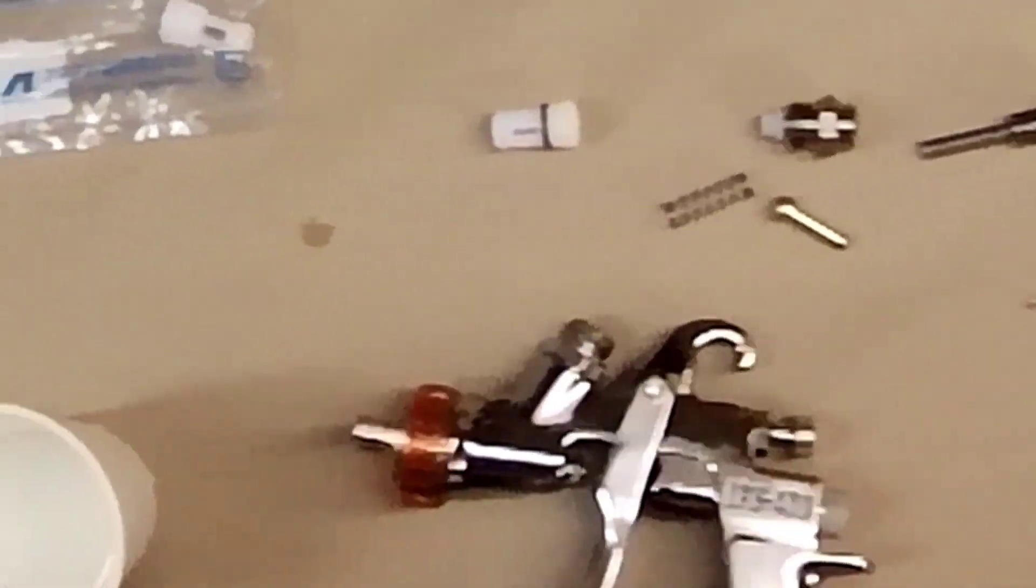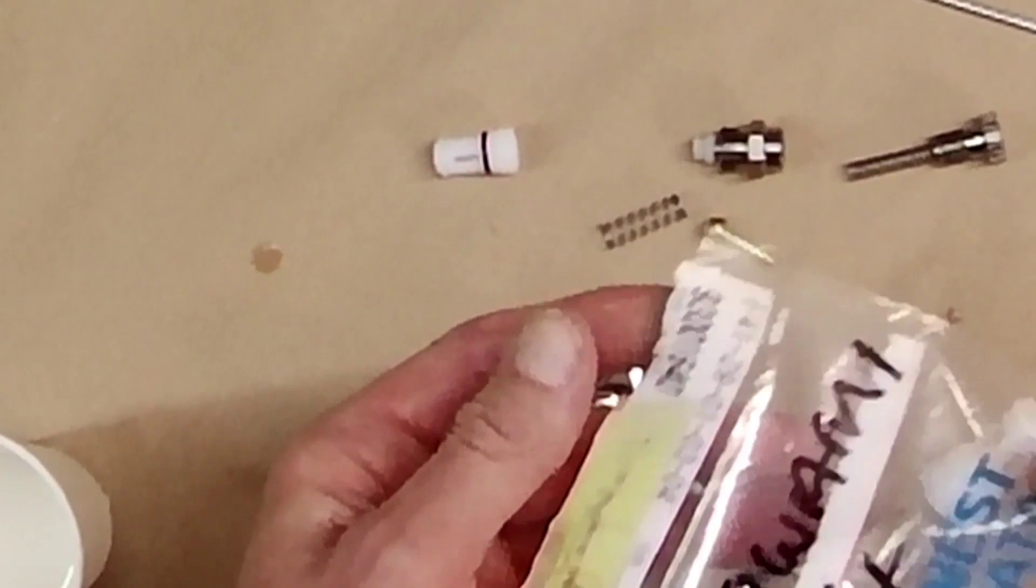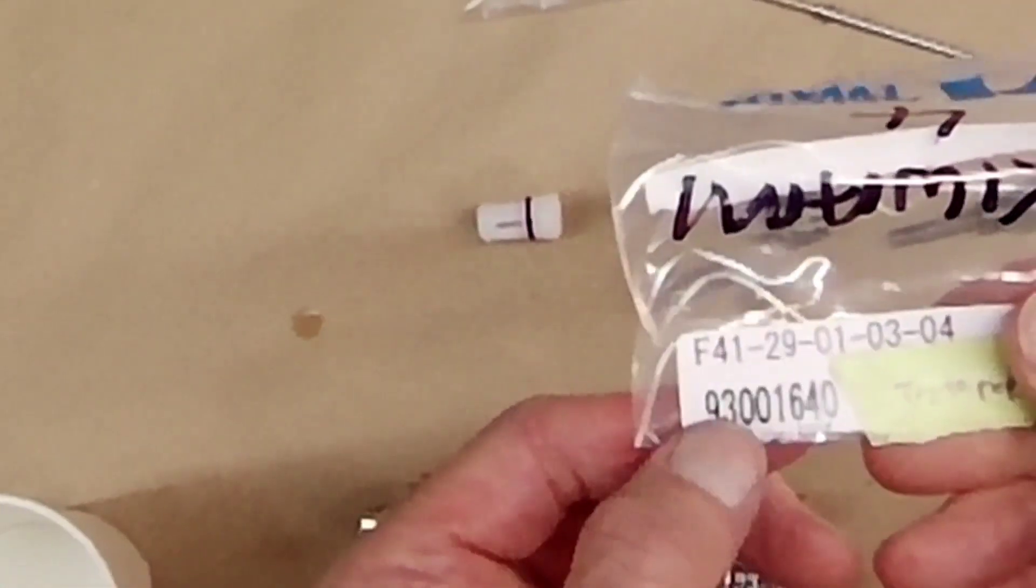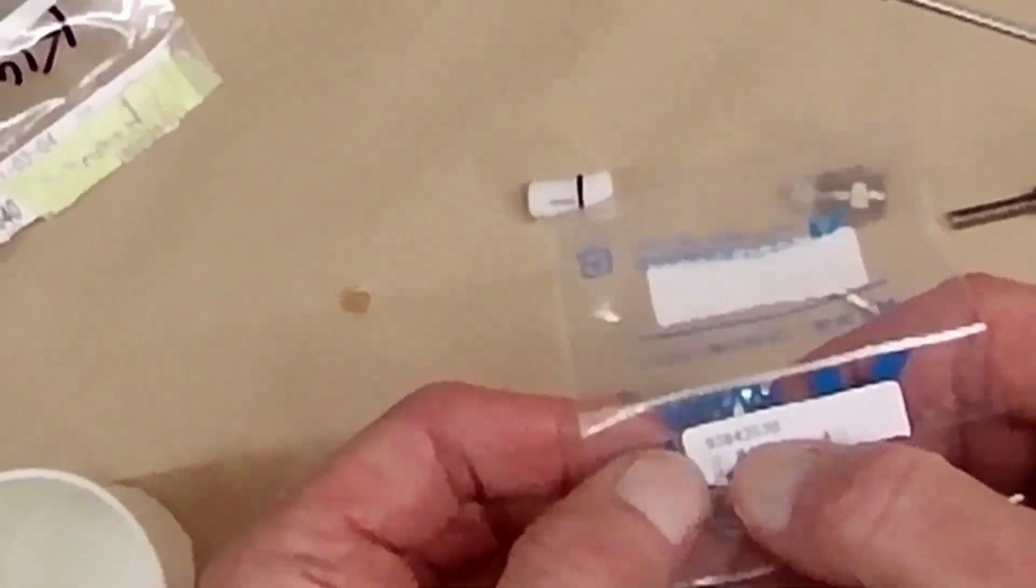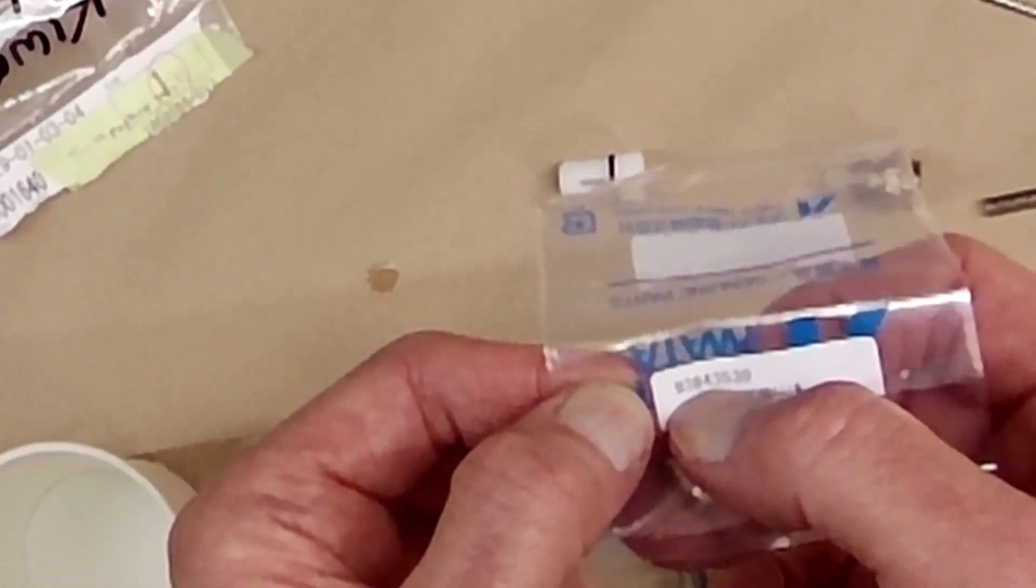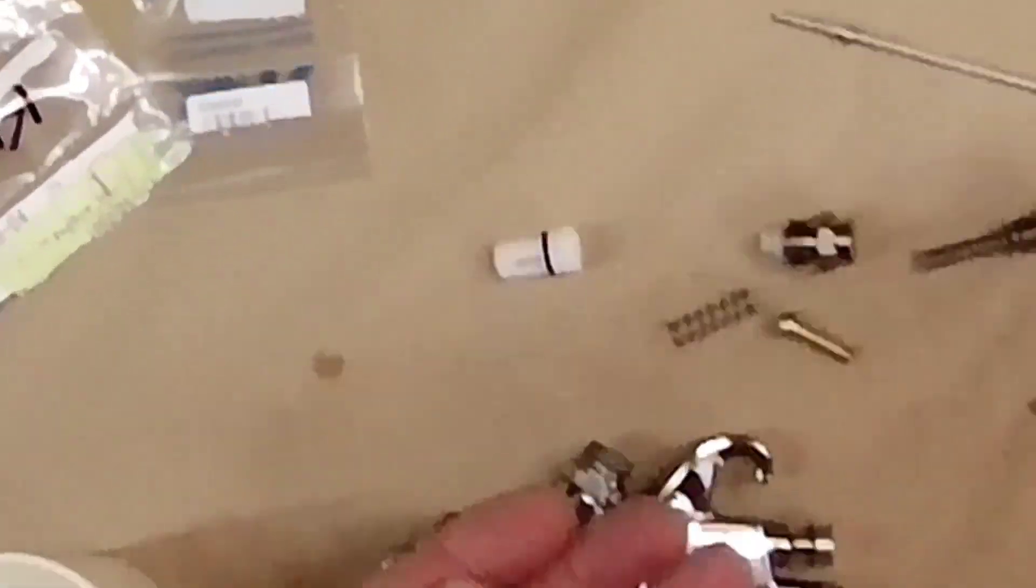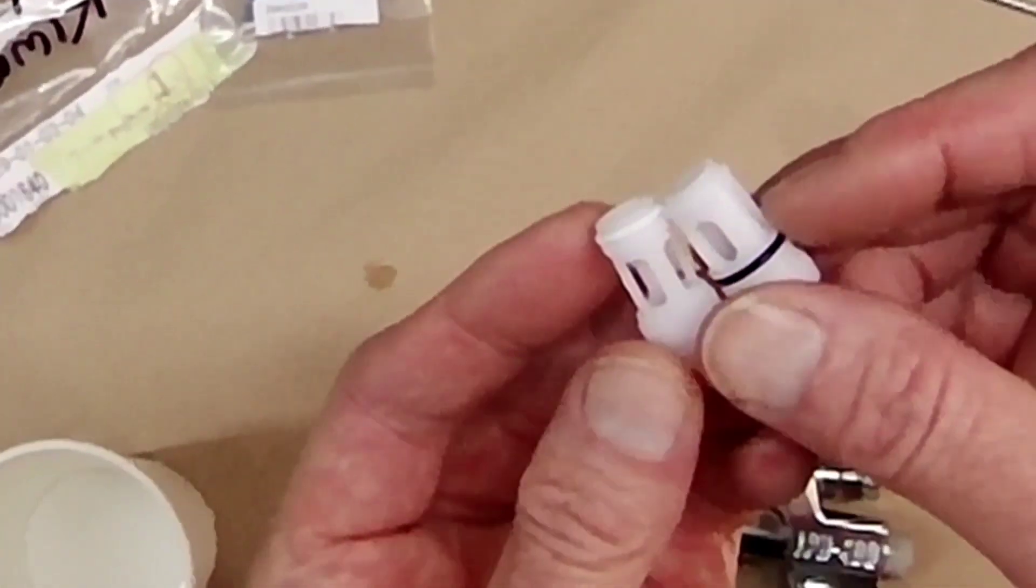And all the Iwata guns I've actually looked at and taken apart all have the same principle, exactly the same way of doing it, although they do do it in a slightly different way. So the components aren't always the same. For example, that is one for a Kiwami 4. I've got a part number for that. If ever you need it for a Kiwami 4, it's 93001640. The part number for the LPH 400, which is the same body as the W400, is 93843530. And that will be a worldwide part number.